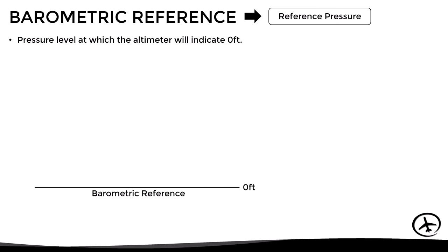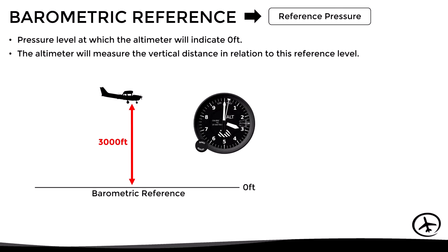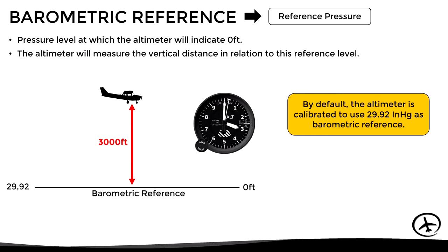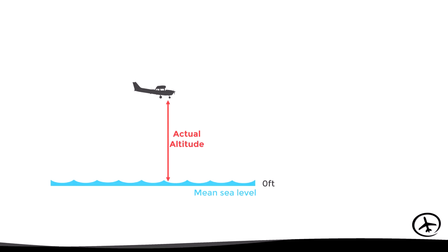The barometric reference is the pressure level at which the altimeter would indicate zero feet, and all indications refer to the altitude of the aircraft in relation to this level. By default, this barometric reference is 29.92 inches of mercury, the standard sea level pressure. However, in practice the pilot can change this barometric reference to any other value.